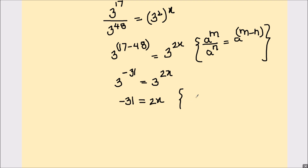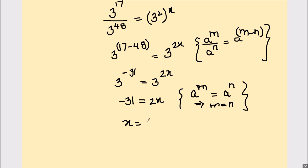As the bases are the same on both sides, the powers will also be the same. So negative 31 equals 2x. By the rule: if a raised to power m equals a raised to power n, then m equals n. Therefore the value of x comes out to be negative 31 upon 2. This is our final answer — we box the answer and this is how we solve the question.